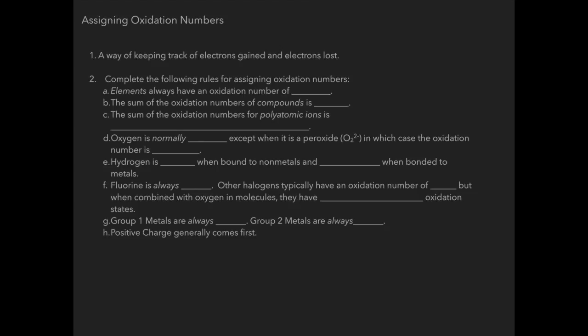To start off with, elements always have an oxidation number of zero. The sum of the oxidation numbers of compounds is also going to be zero. And then if you have a polyatomic ion the sum of its oxidation numbers is simply going to be the sum of the charge of that polyatomic ion. Oxygen normally has a negative two oxidation number except when it acts as a peroxide O2⁻ in that case it has a negative one oxidation number.